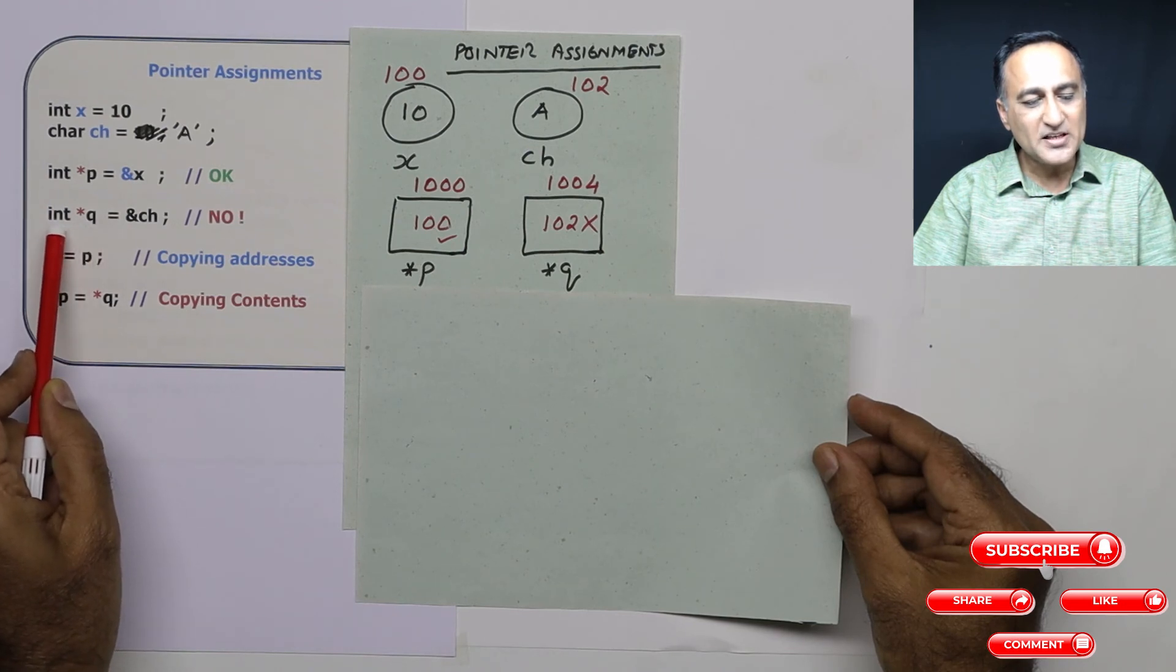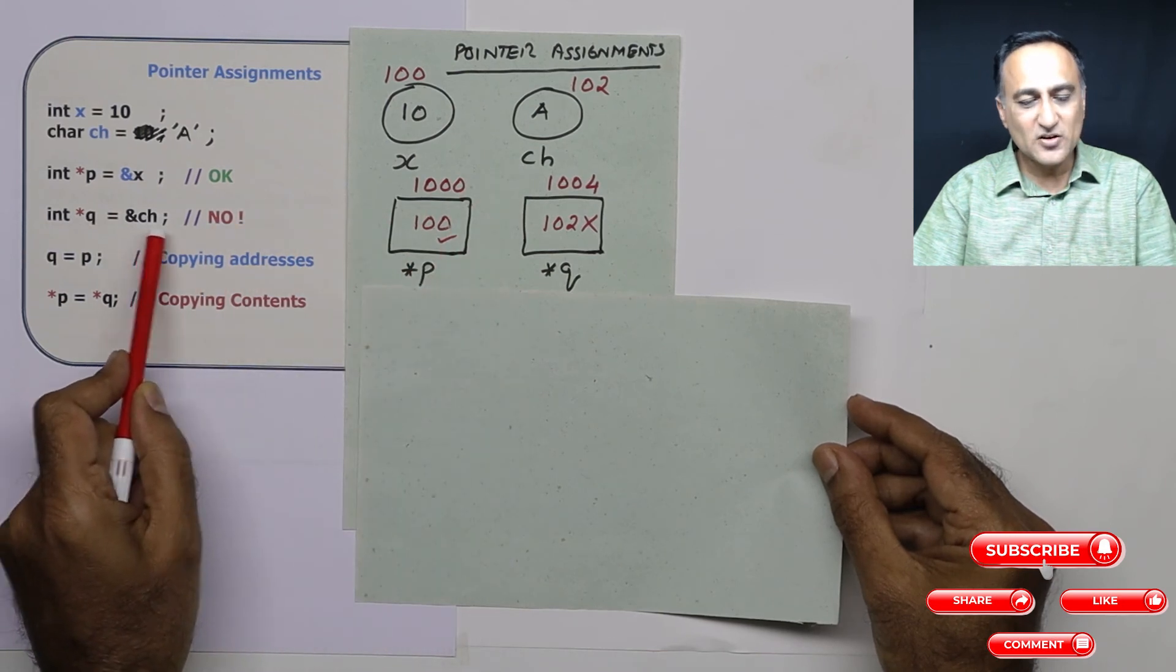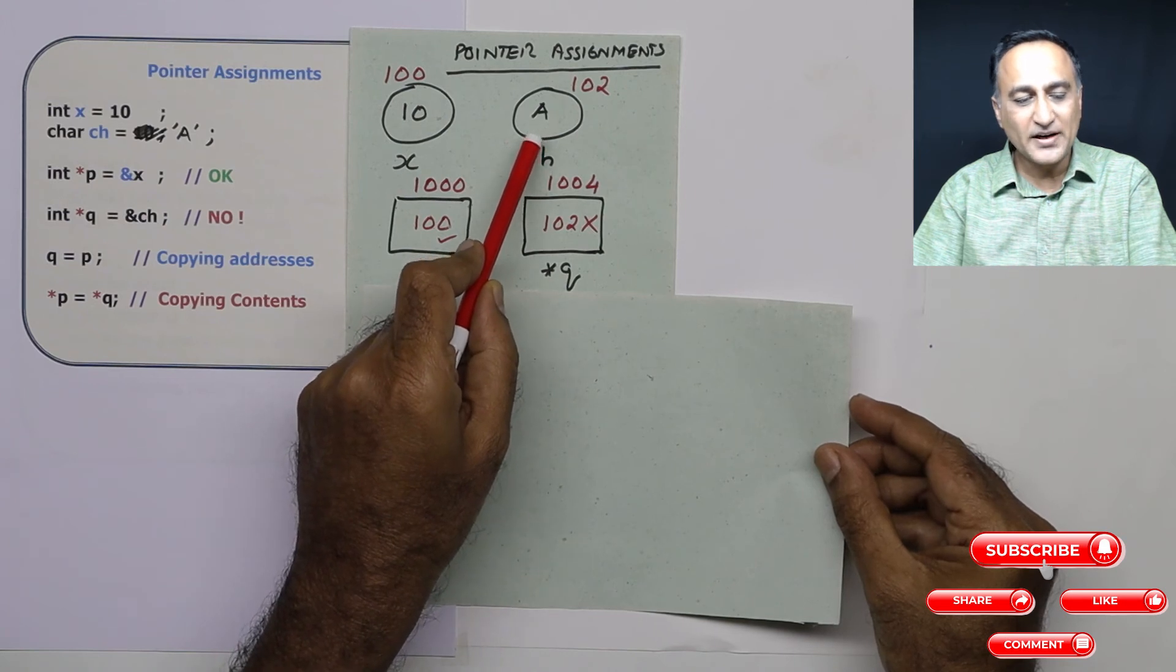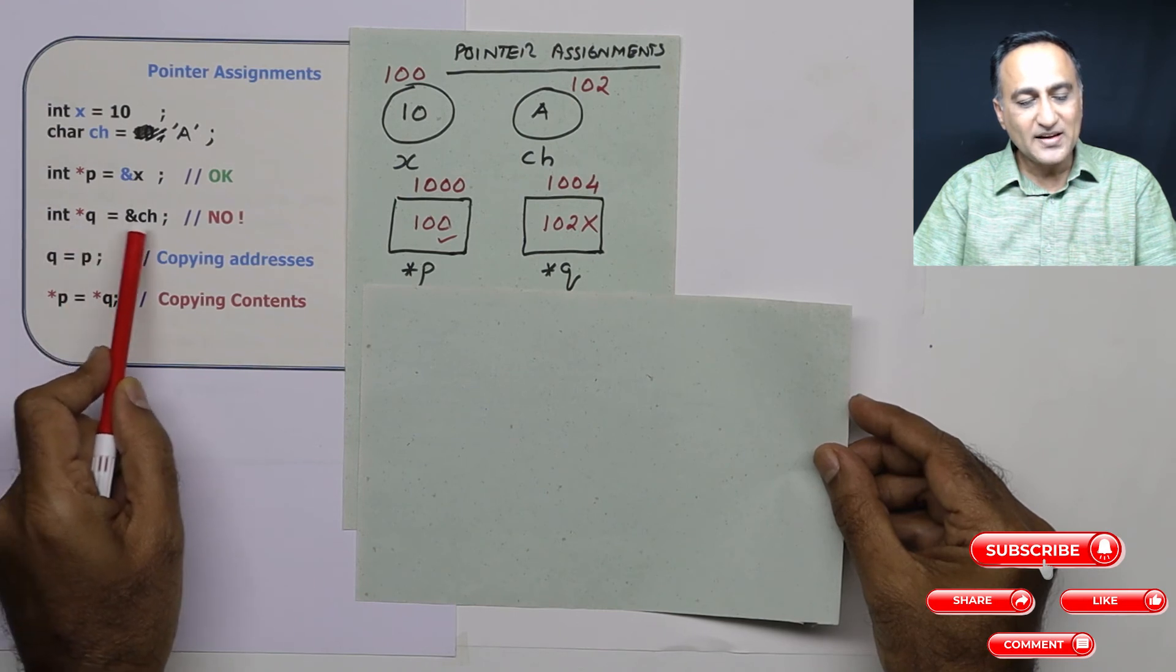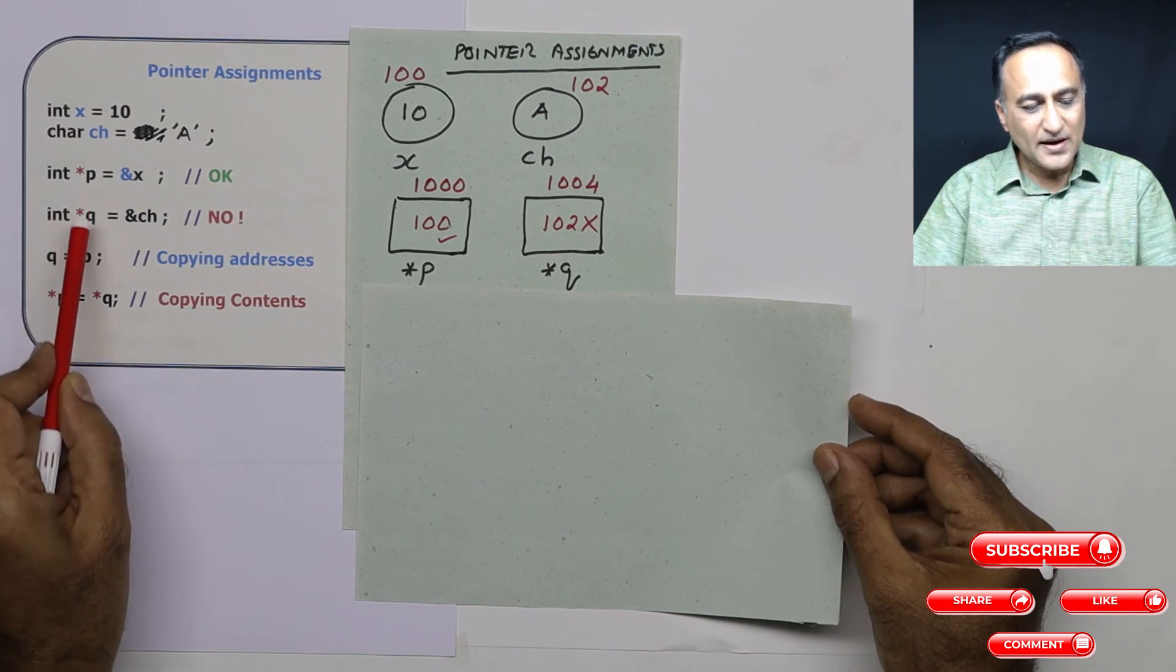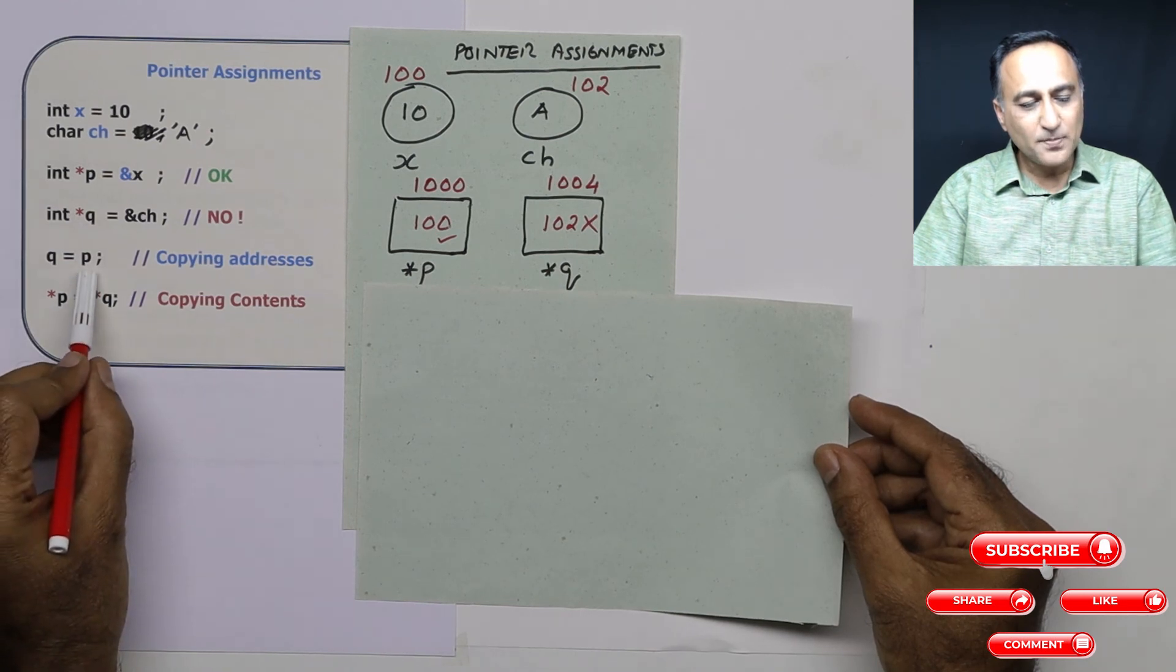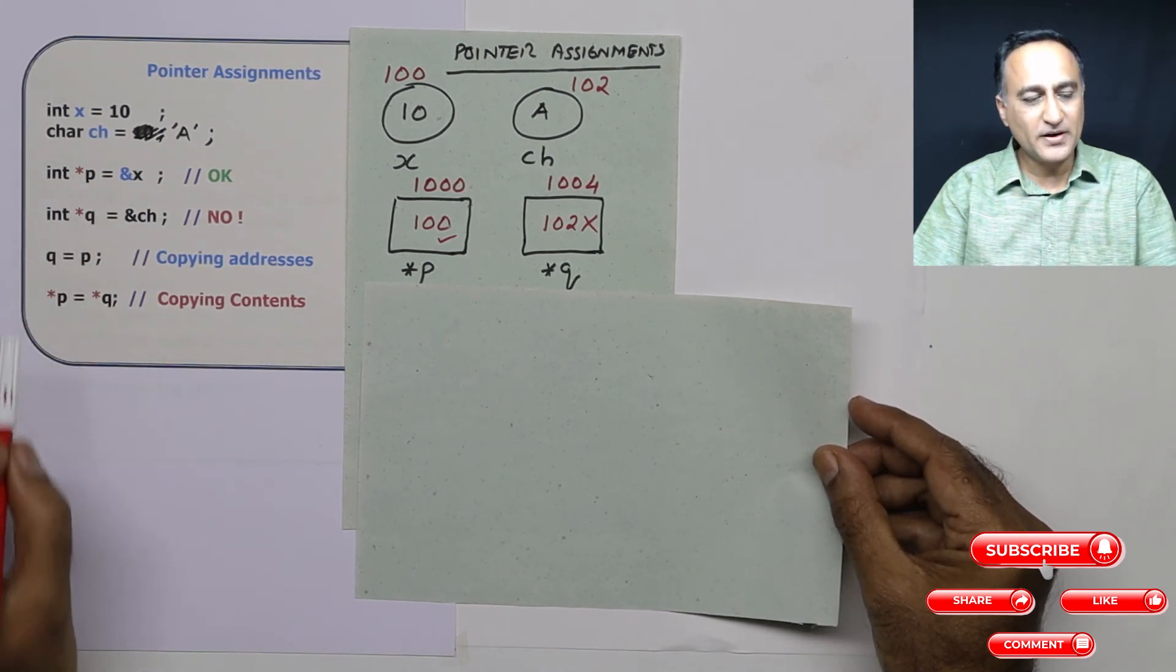Now when I say int star q is equal to address of ch, this is not acceptable because q is a pointer to an integer type of data whereas ch is an address, or address of ch is an address to a character type of data. Now you may be wondering why I can't take an integer pointer and give it the address of character. I will do the explanation in a second. But if int star p and star q are pointers to integer type of data, I can give p the address of q or q the address of p. This is perfectly fine because both are referring to integer types of data.